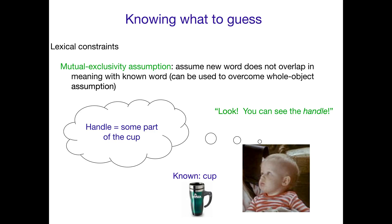Children use mutual exclusivity to reason: I know a word for the entire object — that's 'cup' — so 'handle' can't mean that. Maybe it refers to some part of the cup, especially if the speaker happens to be holding or otherwise really focusing on that part.